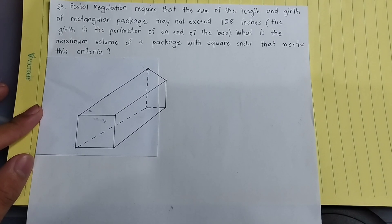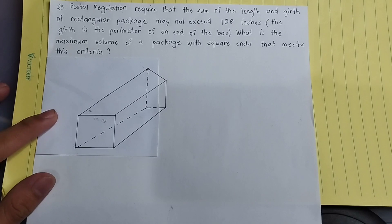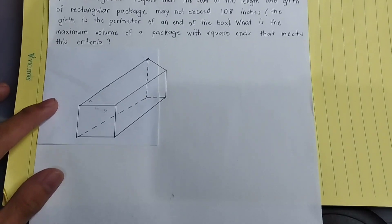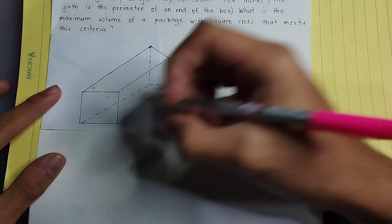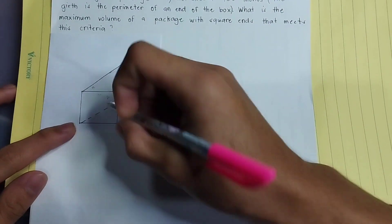What is the maximum volume of a package with square ends that meets this criteria? So given this scenario, we can identify the girth as this perimeter or this area in this box.